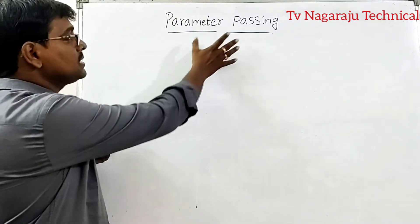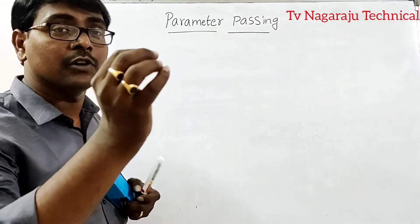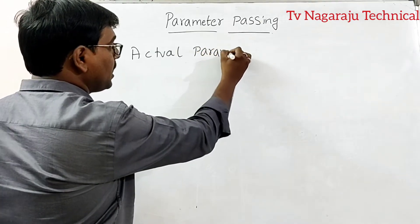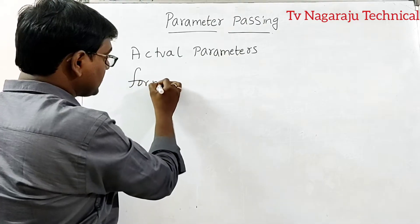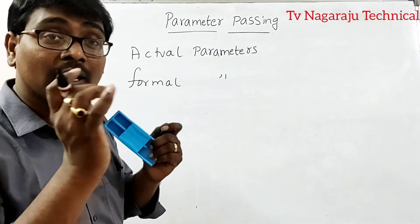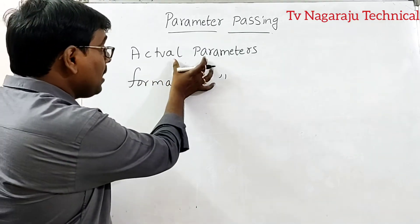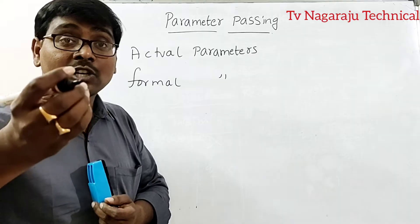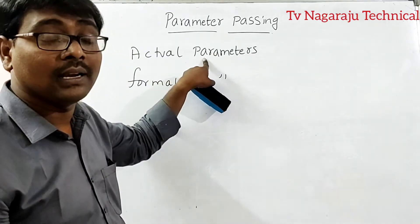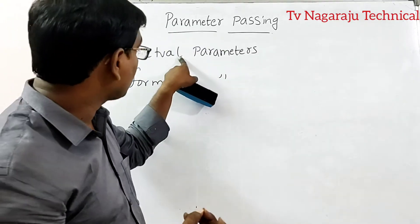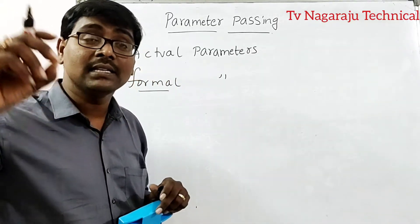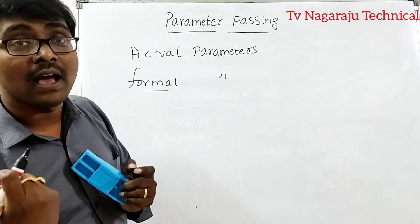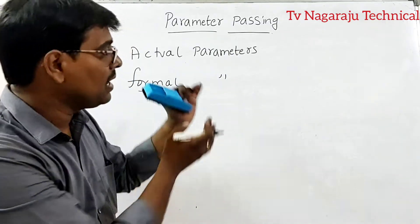Before discussing the different ways of parameter passing, you need to know some basic terminology. Generally, parameters are of two types: actual parameters and formal parameters. The parameters present in the function call are called actual parameters — whatever values we are passing. The parameters declared in the function definition, which receive the values, are called formal parameters.